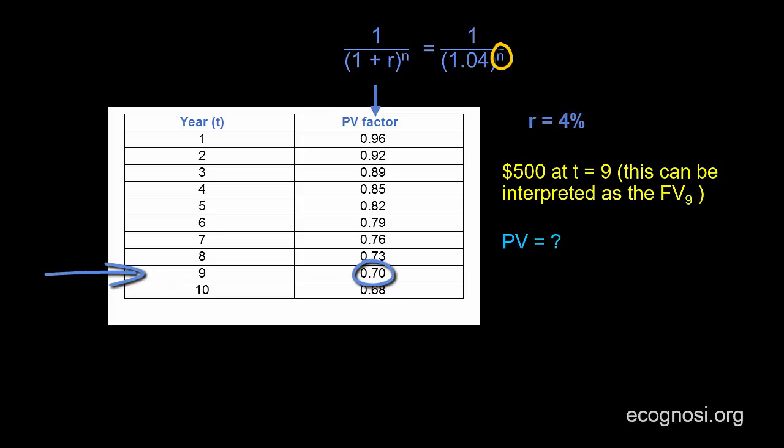That will give me a present value of 500 times 0.7, which equals $350.